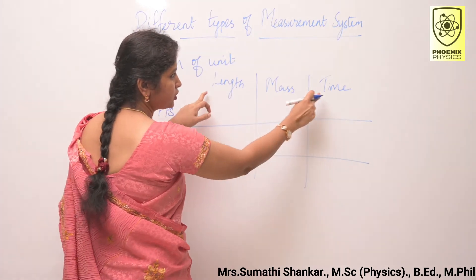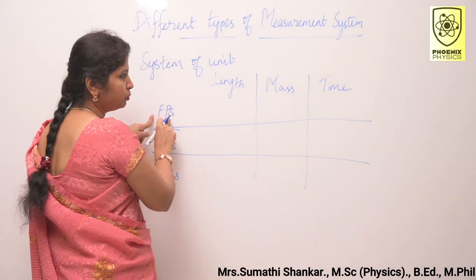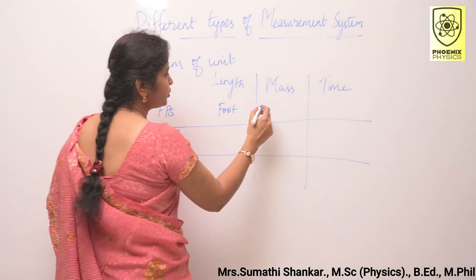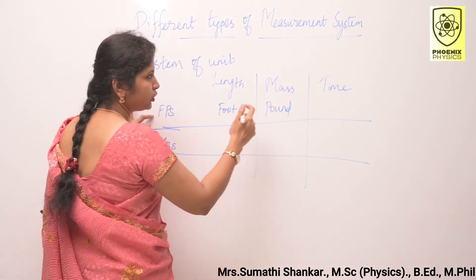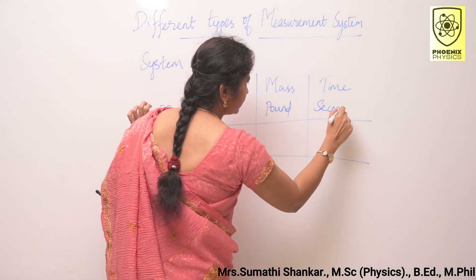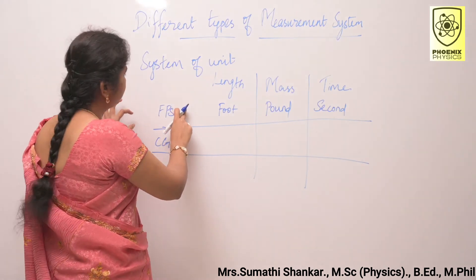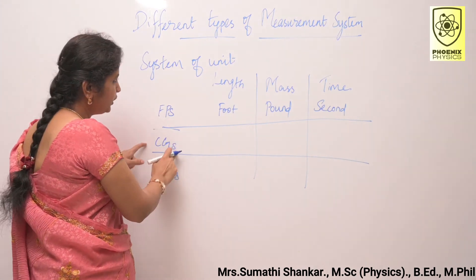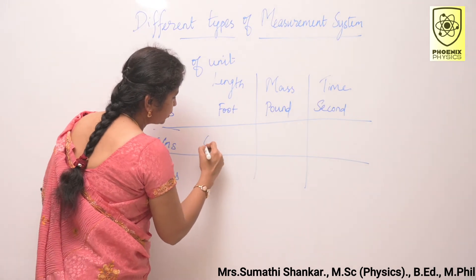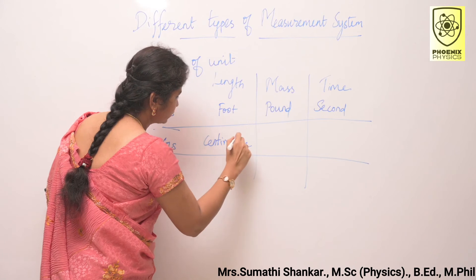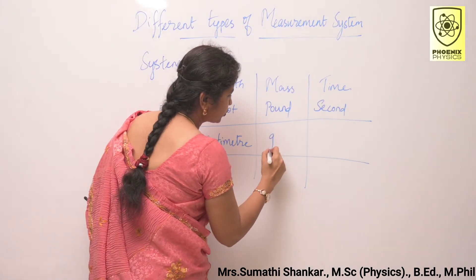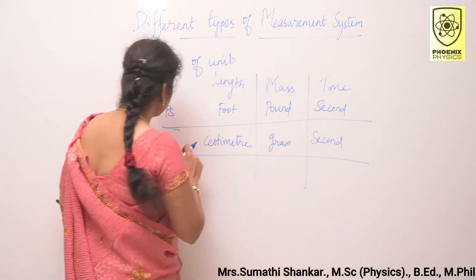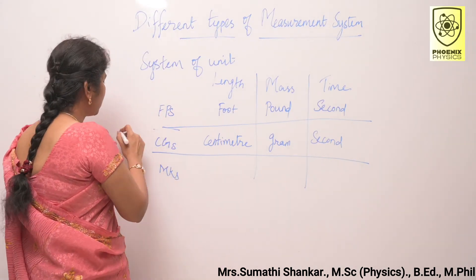Considering three fundamental quantities — length, mass, and time — in the FPS system: length is expressed as foot, mass as pound, and time as second. The FPS system is known as the British engineering system. In the CGS system: length is expressed as centimeter, mass as gram, and time as second. The CGS system is known as the Gaussian system.